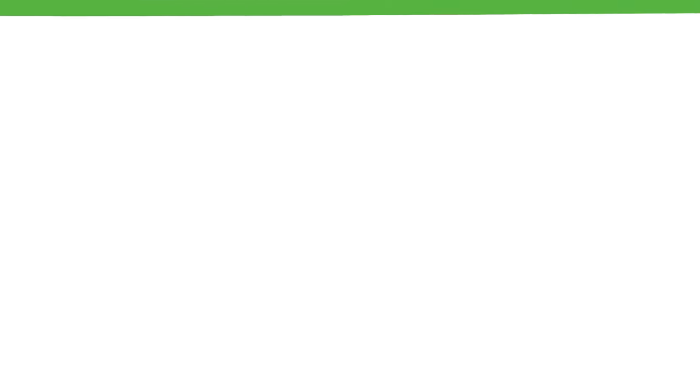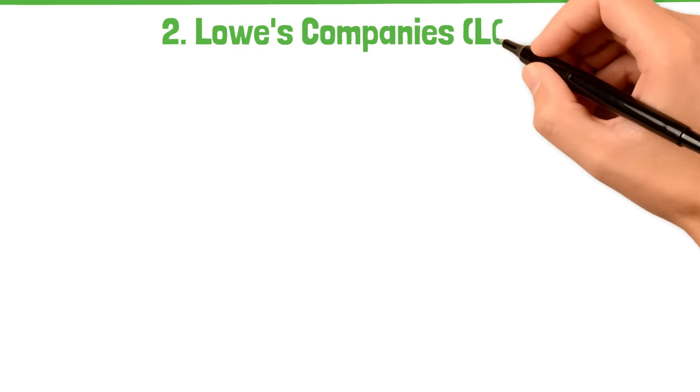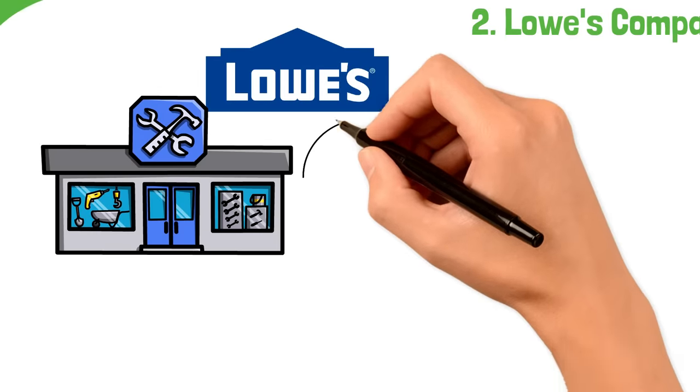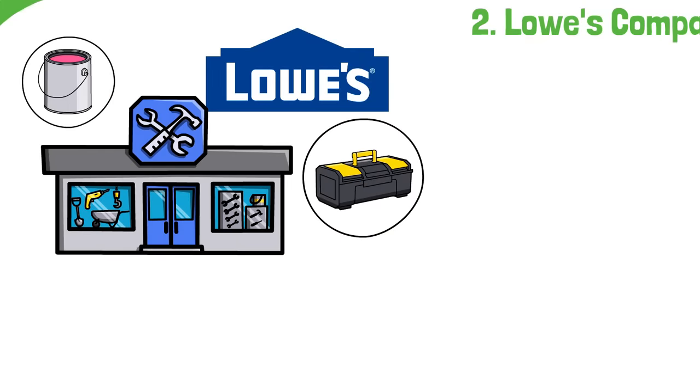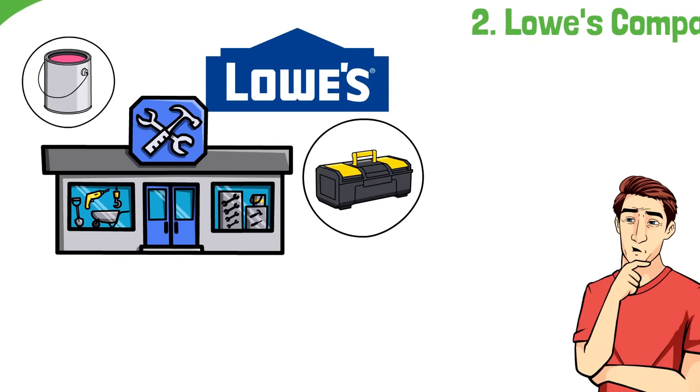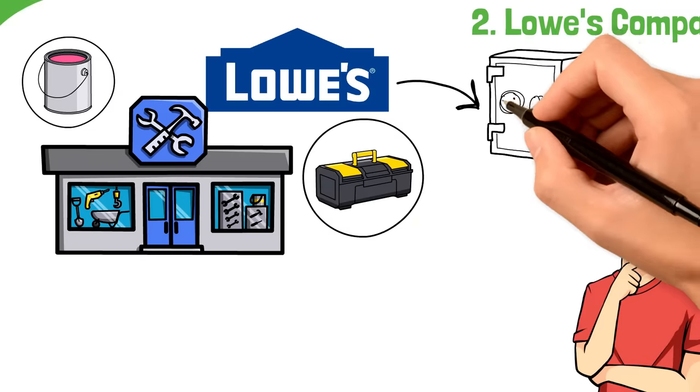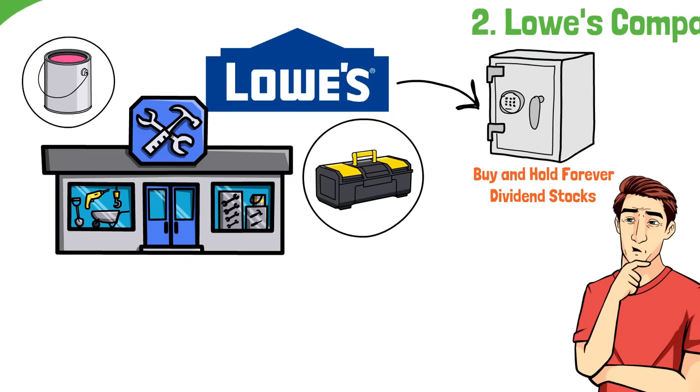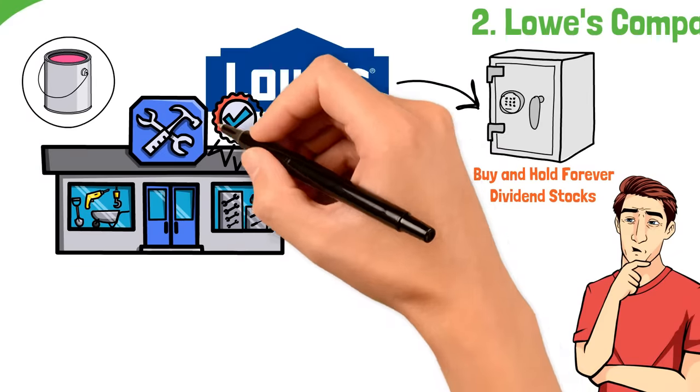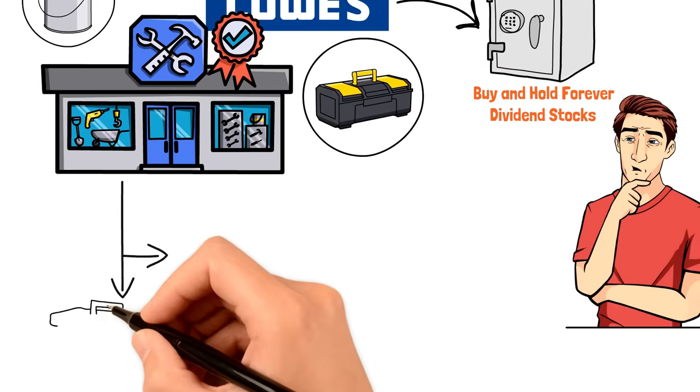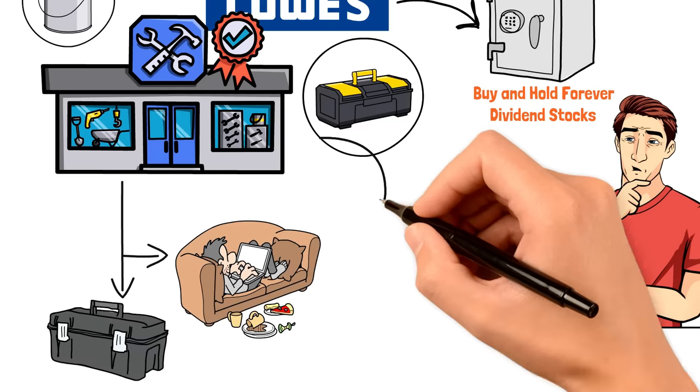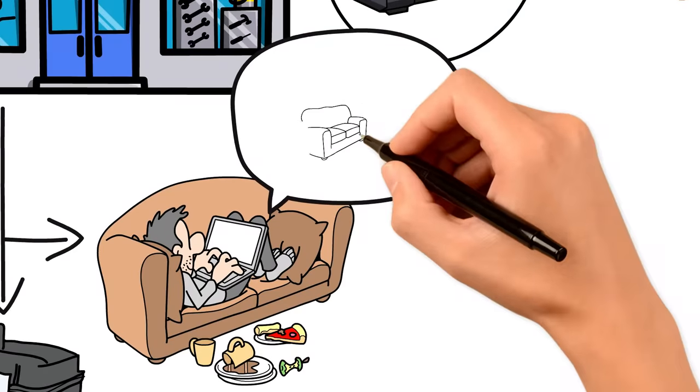Moving on to our second star player in Bill Ackman's lineup, we've got Lowe's Companies, ticker symbol LOW. Lowe's might make you think of weekend home improvement projects, or that time you went looking for the perfect paint color. But there's a lot more to Lowe's than just being the go-to spot for DIY enthusiasts. So why does Lowe's make it into Ackman's portfolio of Forever Stocks? It boils down to a few key points. First off, Lowe's is a titan in the home improvement retail sector. They're not just selling tools and materials, they're selling the dream of a better home. And that dream is something that never goes out of style.